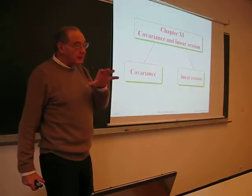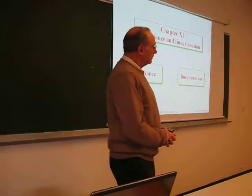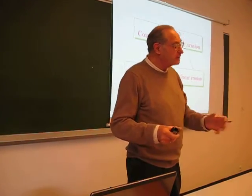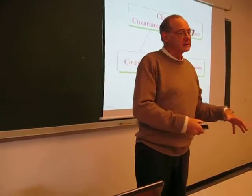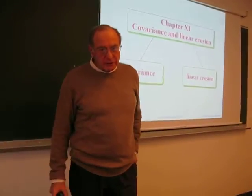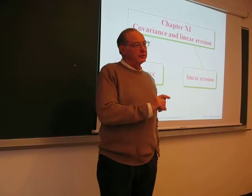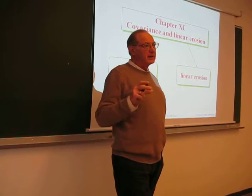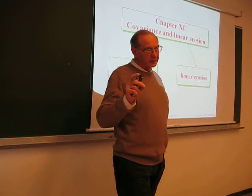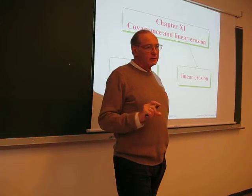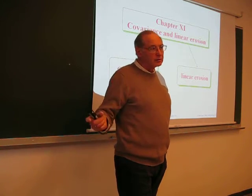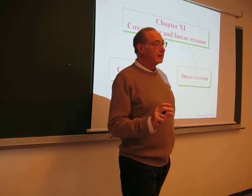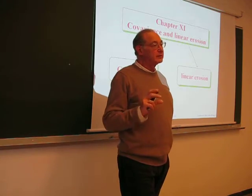Today we will see two aspects of random processes. First, the measurements, and second, the randomness itself. For the measurements, we have two notions which are sister notions: the covariance and the linear erosion. Both are erosions, as we saw in the general case, but they are very simple and the most practical for measurement.